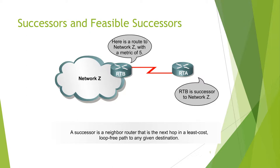Network Z is connected through router RTB to router RTA. There is a route to network Z with a metric of 10. RTB is a successor to network Z. A successor is a neighbor router that is the next hop, providing a loop-free path to any given destination.